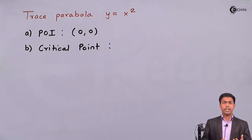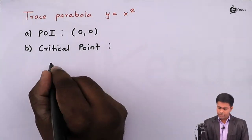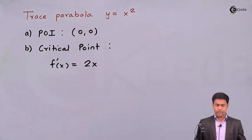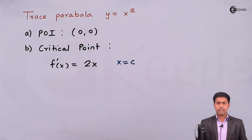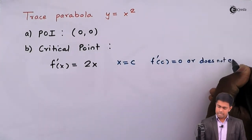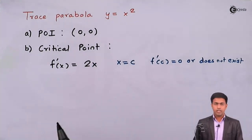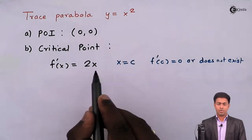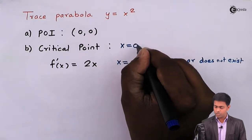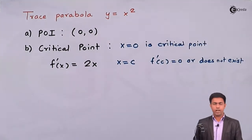For the critical point, we find the first derivative of the curve. Since y = x², f'(x) = 2x. A critical point x = c is one where f'(c) = 0 or does not exist. Setting 2x = 0, we get x = 0, so f'(0) = 0, making x = 0 our critical point.